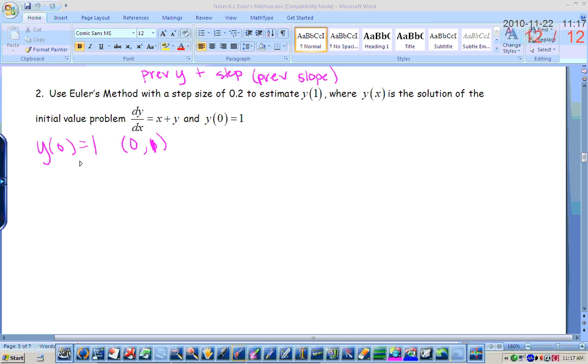Alright, so your next, if the step size is 0.2, then the next y value would be y of 0.2. If we're going to move 0.2 to the right, then we're looking for the next y value, which would be y of 0.2. Okay, so we're going to use the formula.